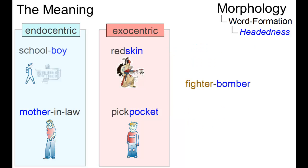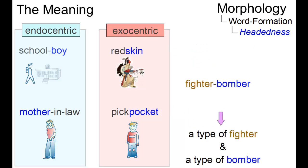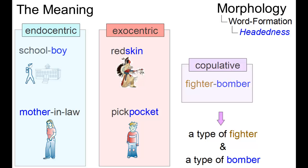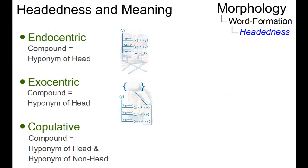And if both the head and its modifier contribute to define the meaning of a compound, then we refer to the compound as copulative, as in fighter-bomber, where we have both a fighter and a bomber. So the grammatical head can be used to define three types of compound: endocentric, exocentric, and copulative.